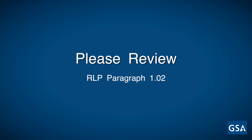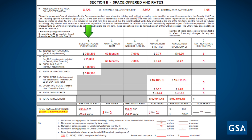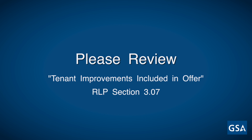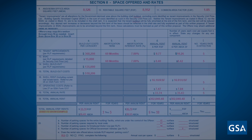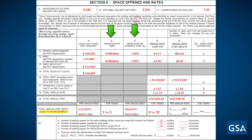It is important to make sure you have reviewed RLP paragraph 1.02 for the amount of square footage the government is seeking to ensure you can comply. In Tenant Improvements Box 12A, you will list the total costs of the tenant improvements per the RLP requirements. Check RLP Section 3.07, Tenant Improvements Included in Offer, for the TI Allowance per square foot, and multiply by the square feet you are offering. In Boxes 12B and C, list the amortization term, which should be the firm term for the lease, and the amortization rate. Once you calculate the yearly cost for TI rent, divide the total TI rent by rentable square feet to fill out the rate in Box 12D, and by ANSI-BOMA square feet for Box 12E.